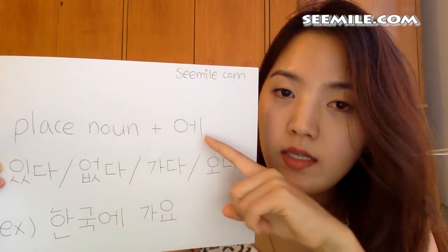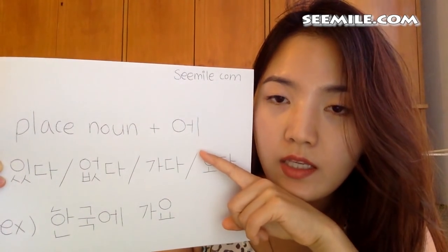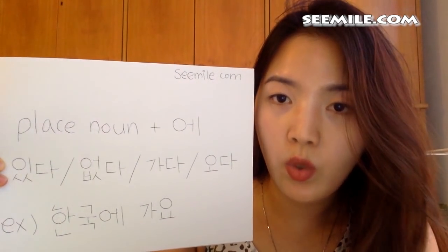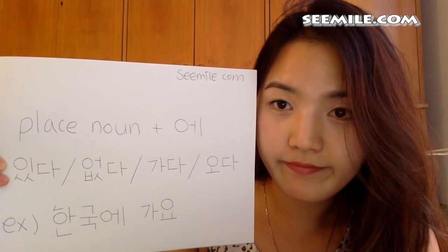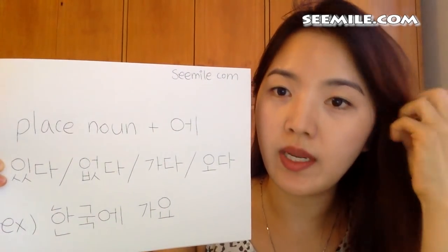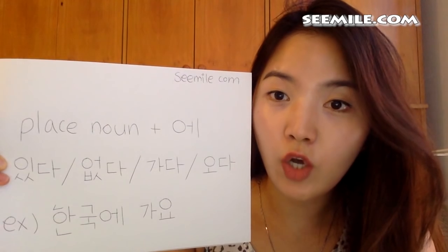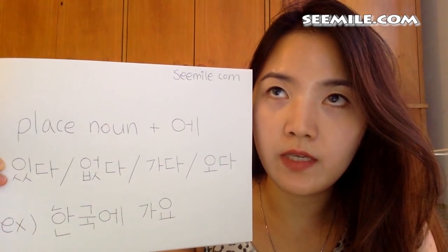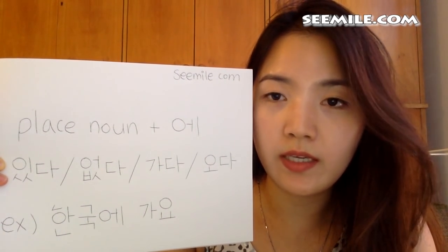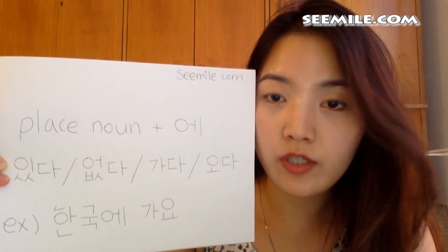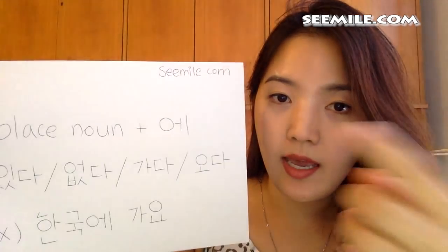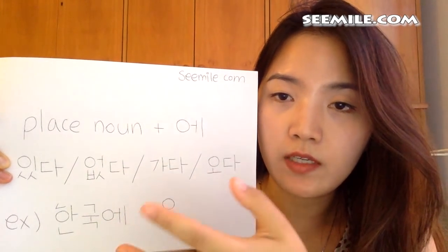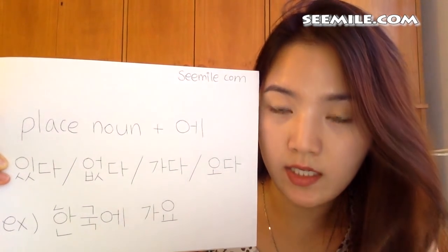So, this particle 에 is used to indicate existence or destination. That's the difference between 에서 and 에. 에서 lets you know the place where the action takes place, and 에 lets you know the existence or the destination.